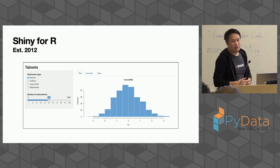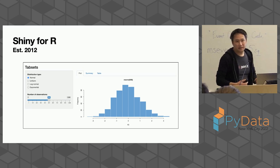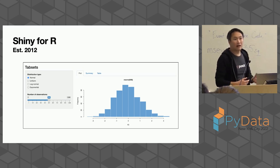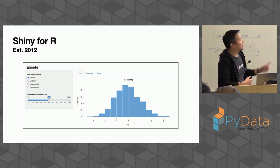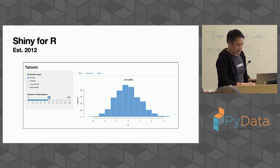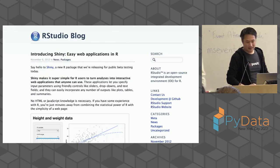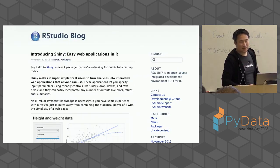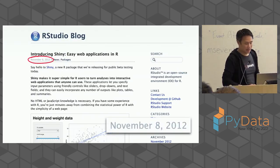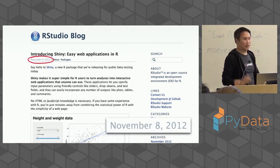Shiny is both old and new. Shiny for R has been around since 2012, and just coincidentally, yesterday was the 10-year anniversary of the blog post introducing Shiny. Happy birthday, Shiny.